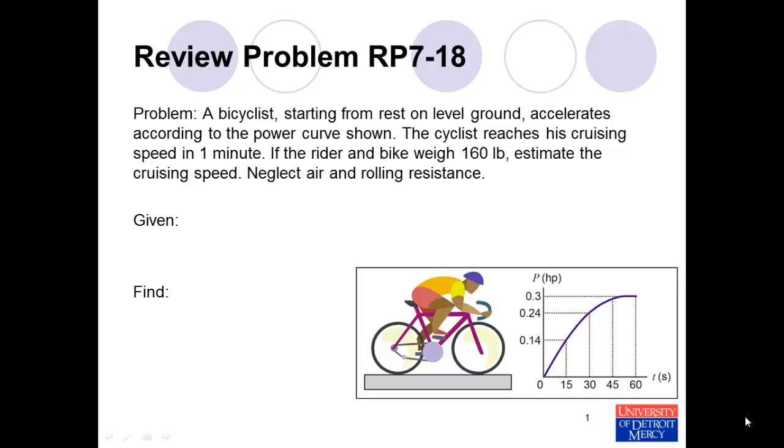This problem is from the text Conceptual Dynamics, specifically review problem 7-18. The problem statement reads: A bicyclist starting from rest on level ground accelerates according to the power curve shown. The cyclist reaches his cruising speed in one minute. If the rider and bike weigh 160 pounds, estimate the cruising speed. Neglect air and rolling resistance.